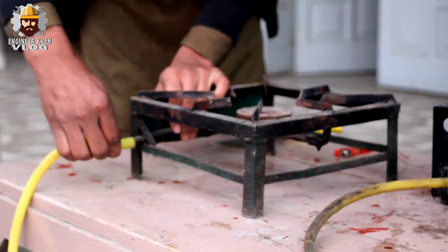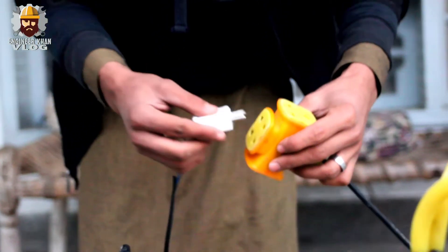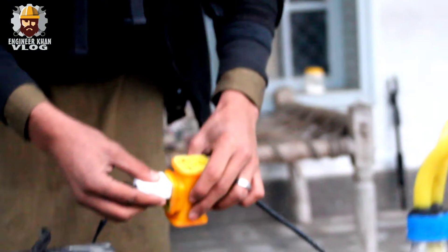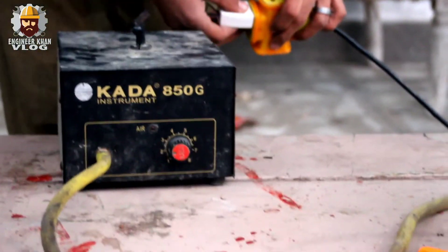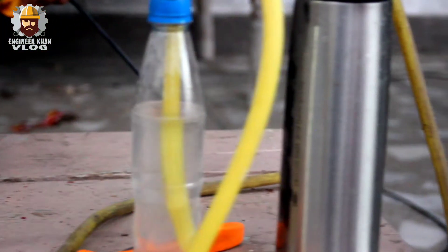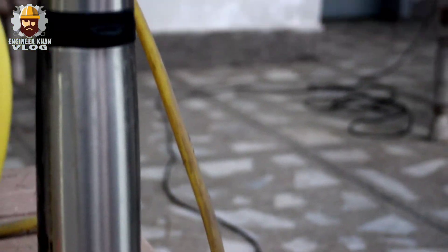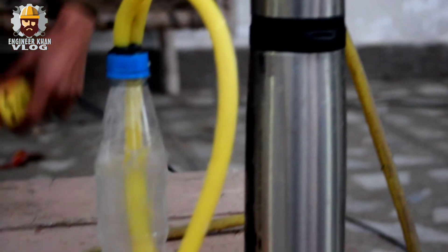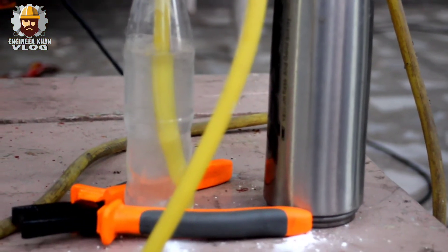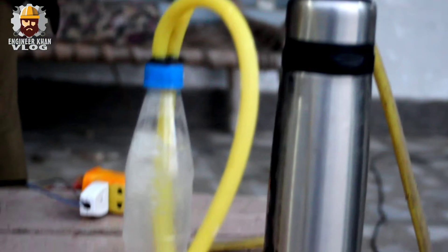When everything is ready, plug in and turn on the air regulator. This will blow pressured air through the pipes to the petrol, creating LPG gas in the form of bubbles. These pass through the soda-mixed water to prevent backfire, and the created LPG then runs through the pipe toward the stove.